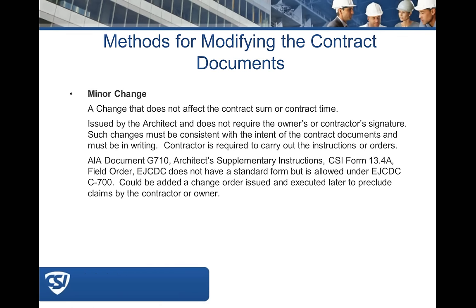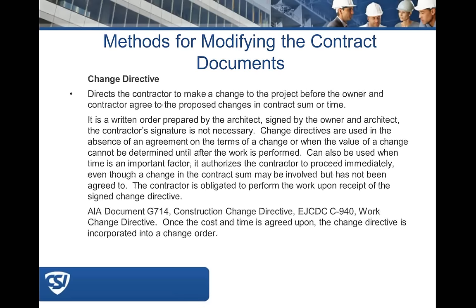We have some info from Kevin on the call, letting us know that the EJCDC field order is actually known as document C942 and is used for authorizing minor changes. The CSI standard form for the architect/engineer to authorize minor changes is also called the field order.